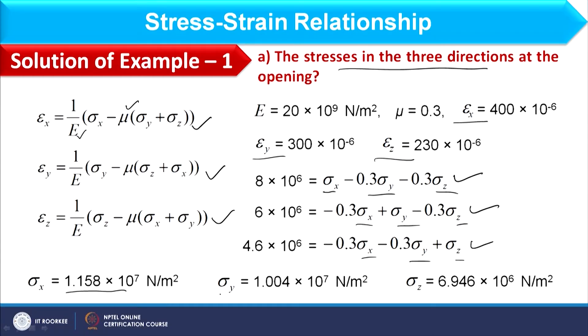Solving simultaneously gives: σ_x = 1.158×10⁷ N/m², with σ_y and σ_z containing their respective values. In this way, we solve for stresses in three directions when strain values are known. Conversely, if stress values are known, strains in all three directions can be calculated. That completes Part 1.